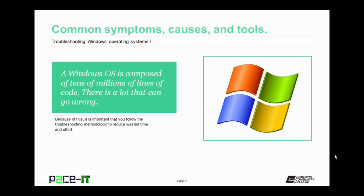The Windows Operating System is composed of tens of millions of lines of code. That's a lot of complexity, and there's a lot that can go wrong. Because of this, it's important that you follow a troubleshooting methodology to reduce your wasted time and to reduce your effort level.